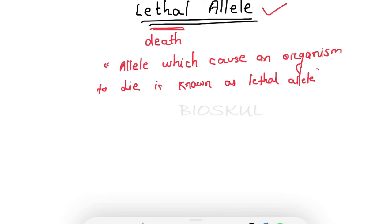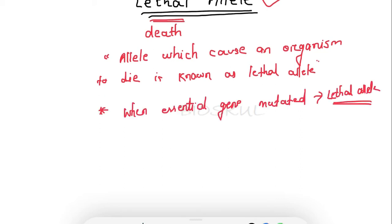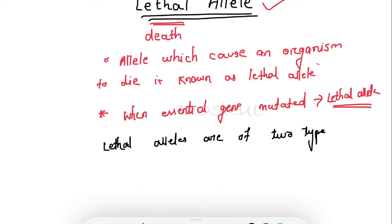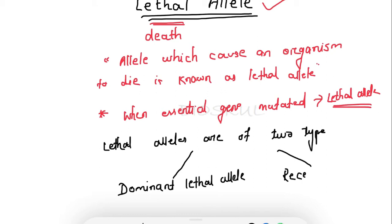Certain genes are highly essential for survival. If such a gene gets mutated, it creates lethal genes or lethal alleles. Alleles are of two types: dominant alleles and recessive alleles. Similarly, lethal alleles are also of two types: dominant lethal alleles and recessive lethal alleles.